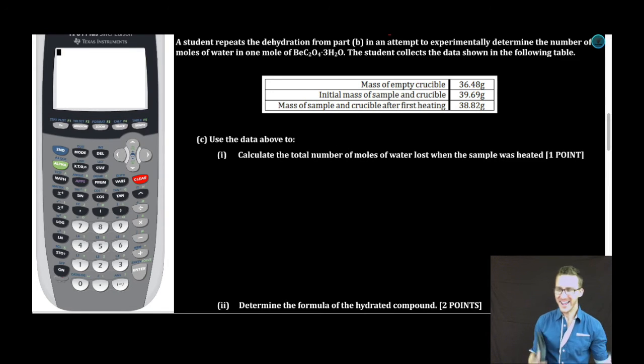A student repeats the dehydration from part B in an attempt to experimentally determine the number of moles of water in one mole of beryllium oxalate trihydrate. The student collects the data shown in the following table. We know that the compound is a trihydrate. That the ratio between anhydrous salt and water is one to three. The student is simply trying to experimentally show that. Does she do that? Let's find out. It says calculate the total number of moles of water lost when the sample was heated.